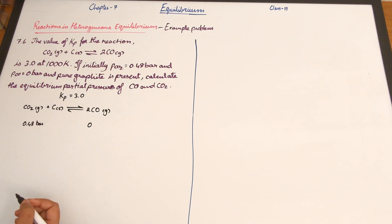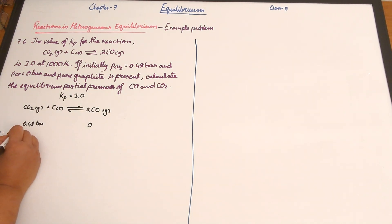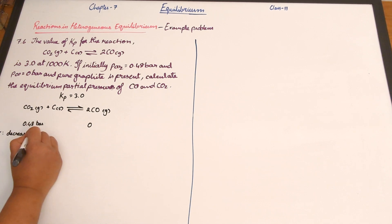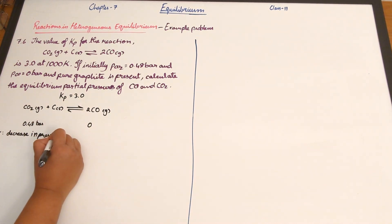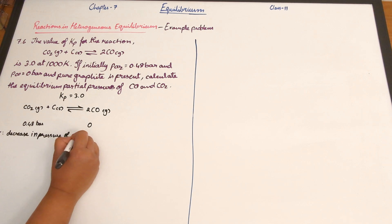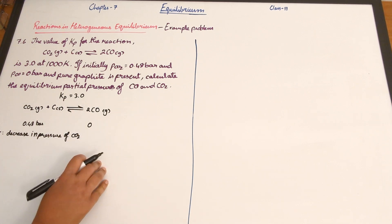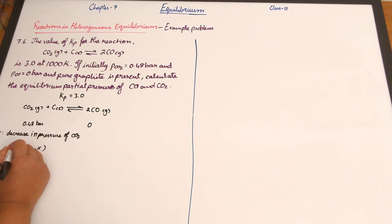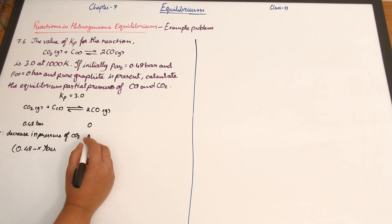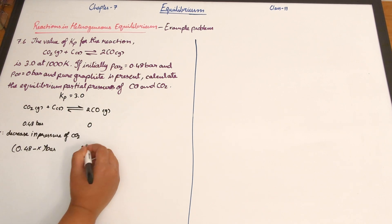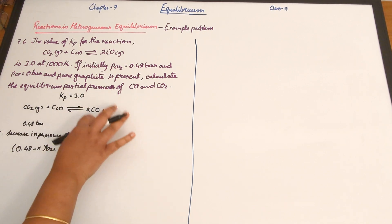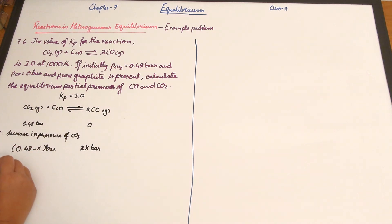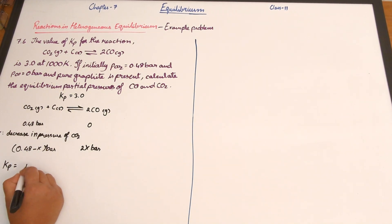At equilibrium, if we assume X is the decrease in pressure of CO2 (or equivalently the increase associated with carbon monoxide), then the partial pressure of CO2 at equilibrium is 0.48 minus X bar, and the partial pressure of carbon monoxide is 2X bar, because 2 is the stoichiometric coefficient of carbon monoxide.